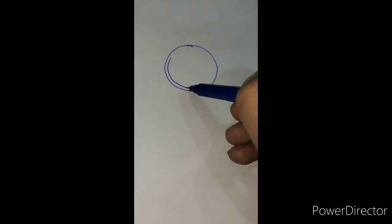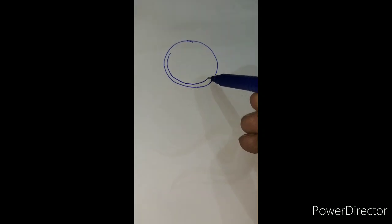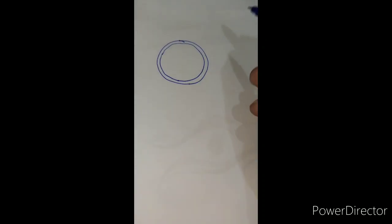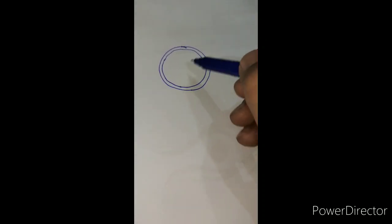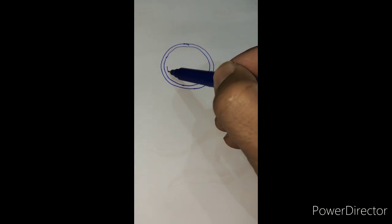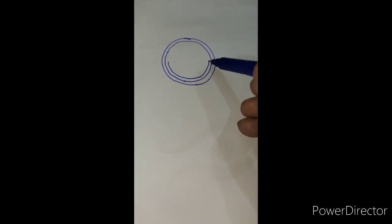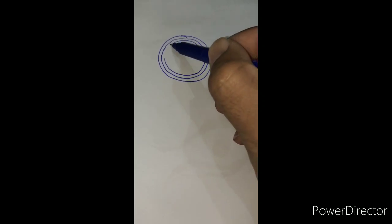Now that's the ninth circle. So if the cup is enlarged up to this circle, that is cup-disc ratio 0.9. Now that's the eighth circle. You should equally divide it as I am drawing, so it will be a little bit more or less. Now that was cup-disc ratio 0.8.